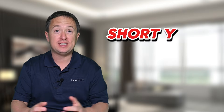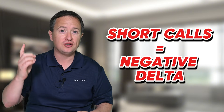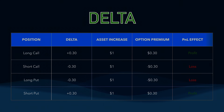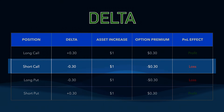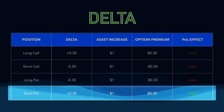With short calls, however, the Delta is negative, because you lose money as the underlying moves up. For example, if you sold a covered call with a minus 30 Delta, you'll lose 30 cents for each dollar that the underlying security moves up. With put options, it's similar, only in reverse. Long puts have negative Delta because the trade loses money as the underlying moves up, and short puts have positive Delta because you profit as the underlying security increases in value.